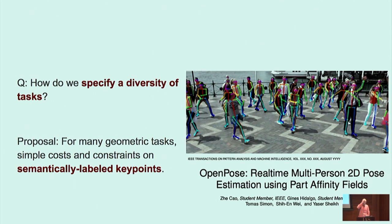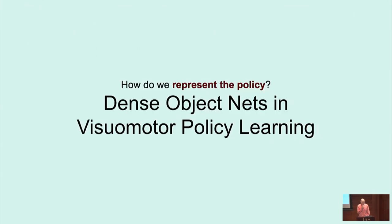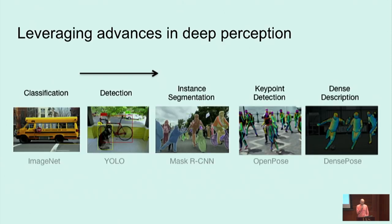The proposal is: for many geometric tasks, simple costs and constraints on semantically labeled keypoints does a pretty good job. How do we represent the policy? We've been thinking a lot about going from cameras to ultimately commands to the robot, and have something now that I feel is close to the solution we want to be searching over. We'll leverage advances in deep learning and deep perception — from classification and detection to instance segmentation and keypoint detection — but there's also this technique called dense descriptors that works incredibly well and we've been leveraging it productively.